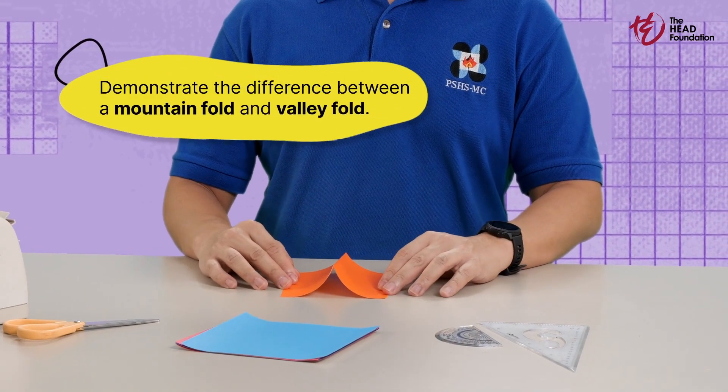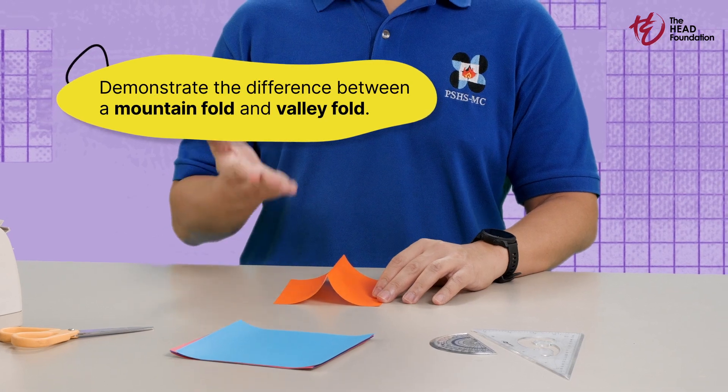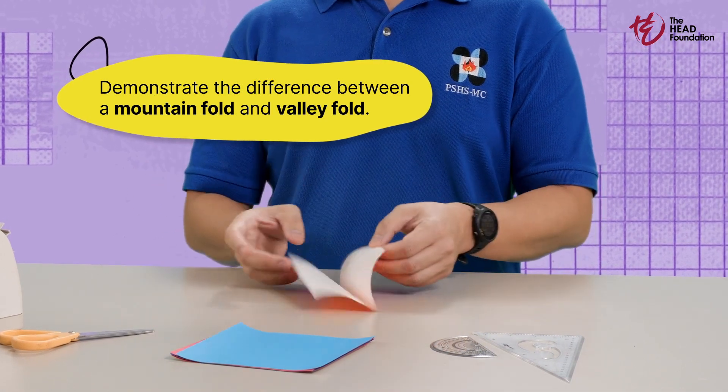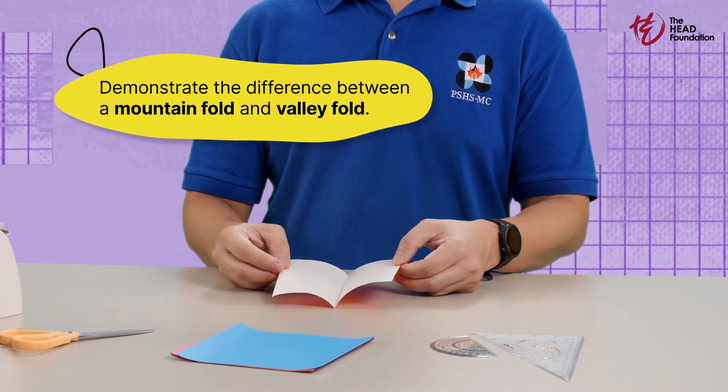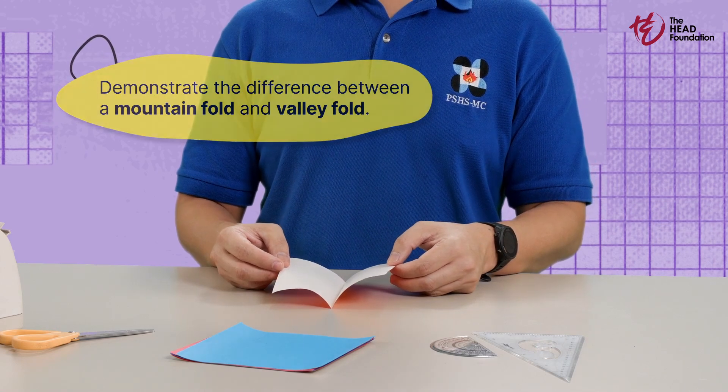This fold here is a mountain fold because it rises like a mountain. And this one is called a valley fold. Imagine a valley sinking down.